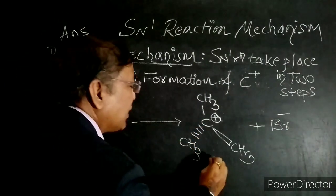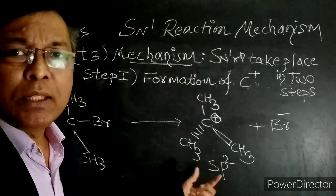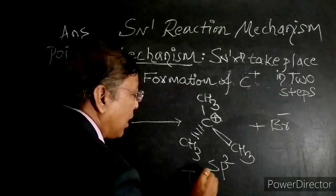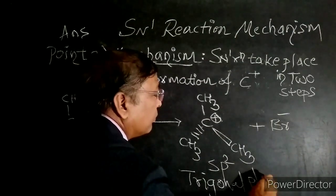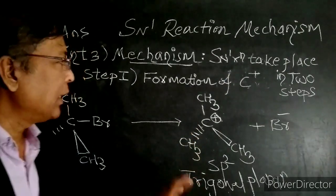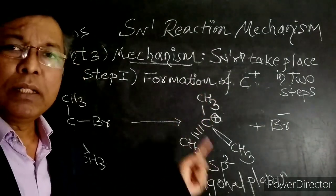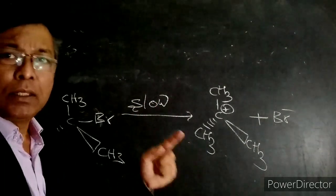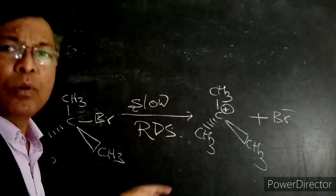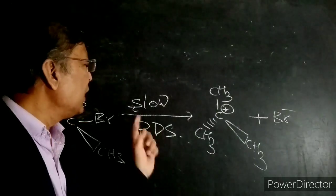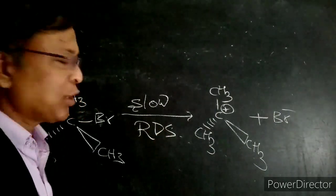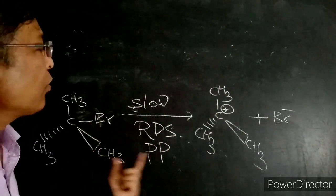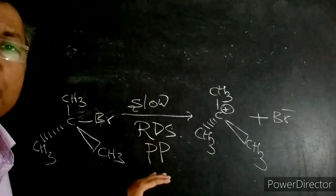This carbon is sp2 hybridized — a carbon bonded to three sigma bonds is sp2 hybridized. The geometry of this carbocation is trigonal planar, with bond angles of 120°. The formation of carbocation takes place very slowly, so this is the slow step and the rate-determining step. This formation of carbocation is favored by polar protic solvents, so polar protic solvents favor SN1 reaction mechanism.